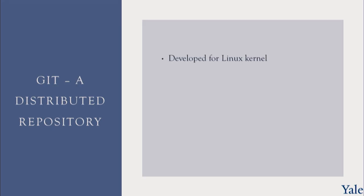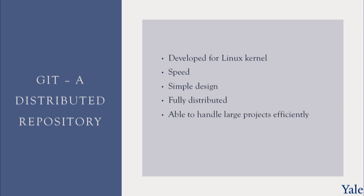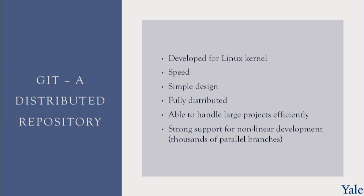Git is a distributed repository. It was developed originally for the needs of the Linux kernel, which is probably the largest open source project out there. It was developed for speed, has a simple design, is fully distributed — meaning the local computer and the server all have equal copies of the entire system — and it can handle large projects efficiently. One of the big things about Git is its strong support for non-linear development with thousands of parallel branches, and we'll talk about branching in the next slide.